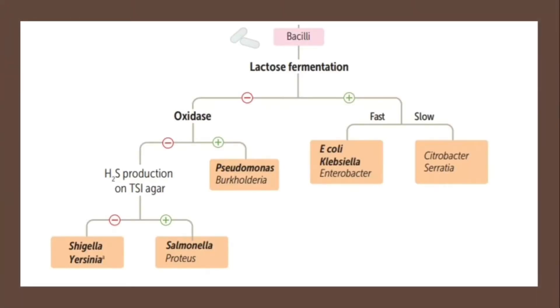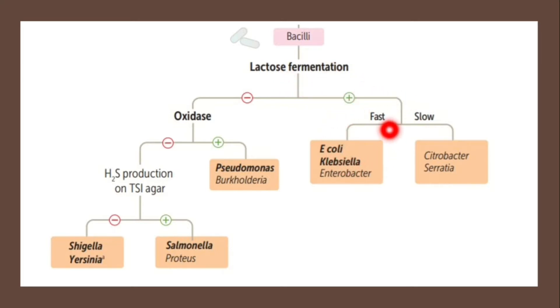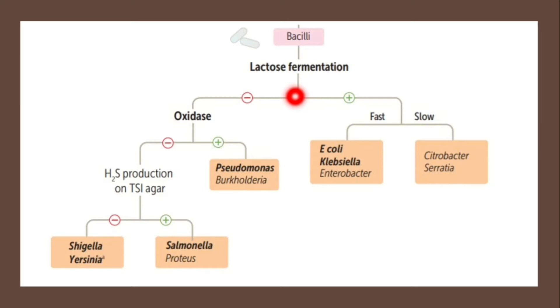Let's talk about Salmonella species. As usual, we are going to start with the classification of a gram-negative bacillus. They are classified according to whether they can ferment lactose or not. Lactose fermenters can be further classified into fast or slow lactose fermenters — for example, E. coli and Klebsiella. We are more interested in Salmonella.